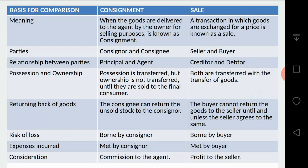Next comes the relationship between the parties. In consignment, it is a principal-agent relationship — the principal is the consigner and the agent is the consignee. In a sale, if done on credit, it is a creditor-debtor relationship — the seller becomes the creditor and the buyer becomes the debtor. Next comparison is possession and ownership, which is very important.